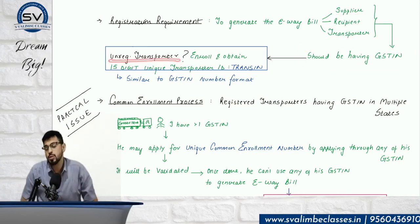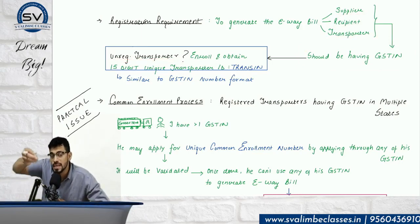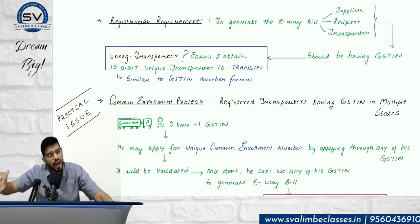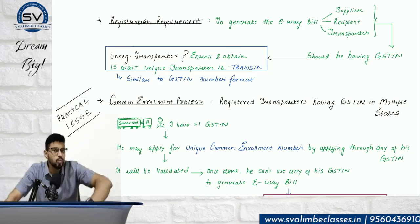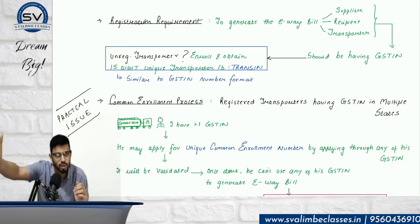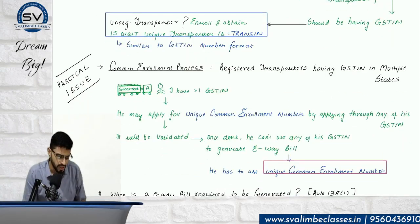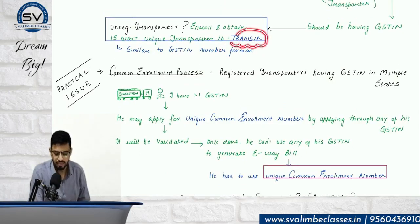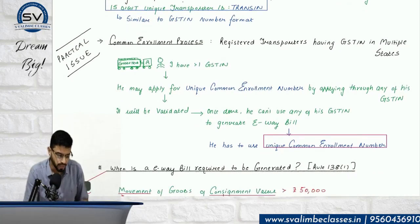Suppose a transporter is not registered under GST — say their turnover is below ₹20 lakh. They ask: just for the purpose of e-way bill, should I take the headache of GST registration? The answer is no. They are told to obtain an enrollment number — a 15-digit number, same format as GSTN — called the TRANSID. Through this enrollment number they can generate the e-way bill.